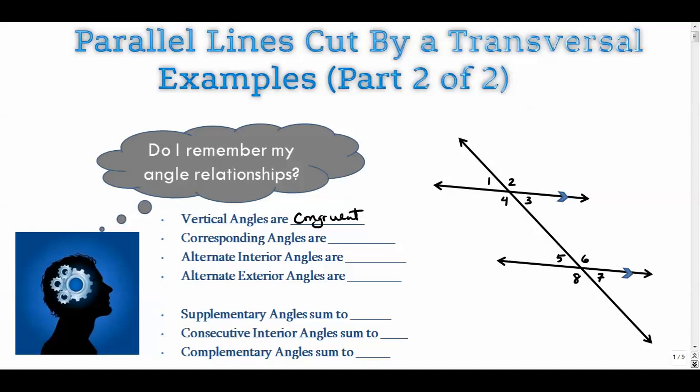Corresponding angles are also congruent. Examples of corresponding angles are two and six. Corresponding angles have the same measure. So let me just use this symbol here. The congruent symbol is an equal sign with a little wave above it.